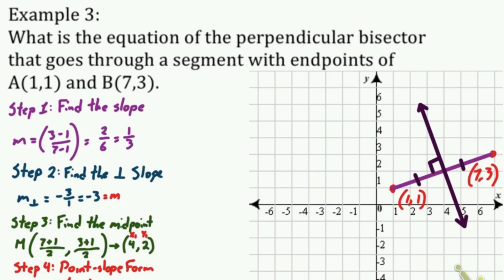I have y minus 2 equals negative 3 times x minus 4. Then, don't forget to distribute the negative 3. So that's going to give me y minus 2 equals negative 3x. Now negative 3 times negative 4 is positive 12. Now I can add 2 to both sides. And that gives me my final equation in slope-intercept form of y equals negative 3x plus 14.